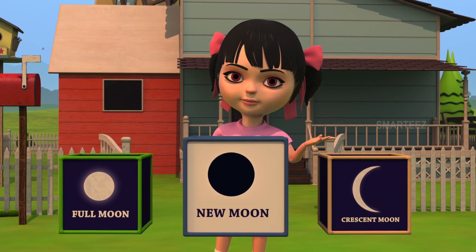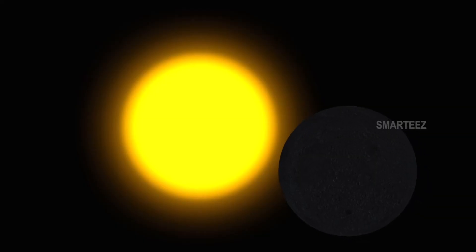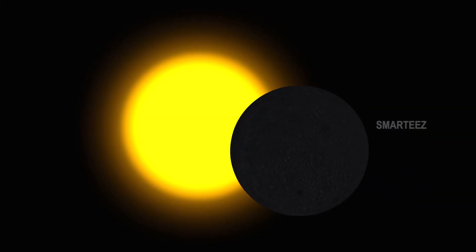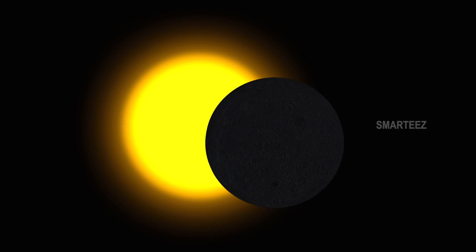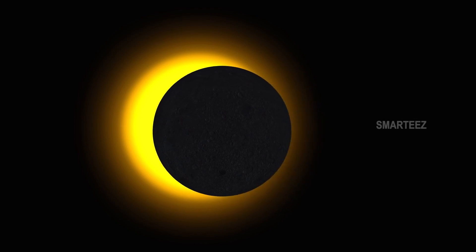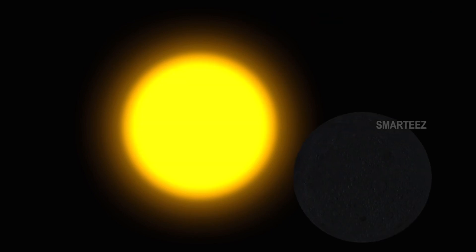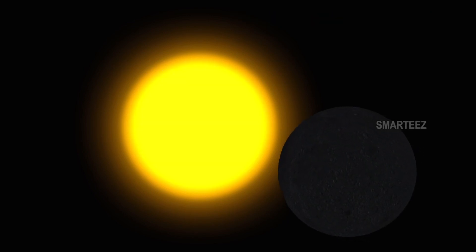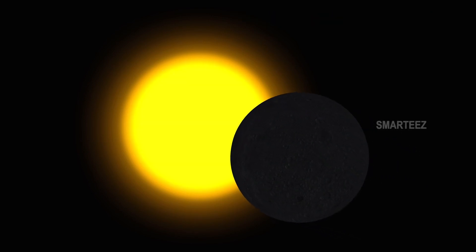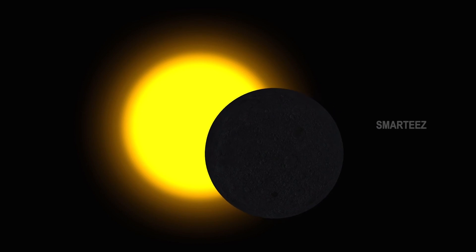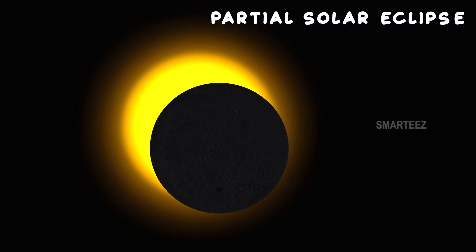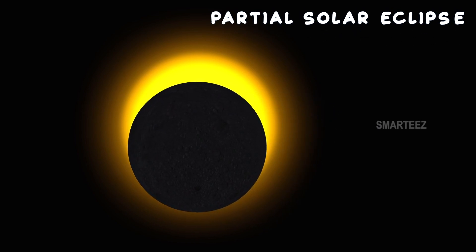Let's take a look. In some areas of the earth, the sun can be completely hidden behind the moon. This is called total solar eclipse. In some areas of the earth, the sun is visible partially. This is called partial solar eclipse. That's how we experience solar eclipse, duckies.